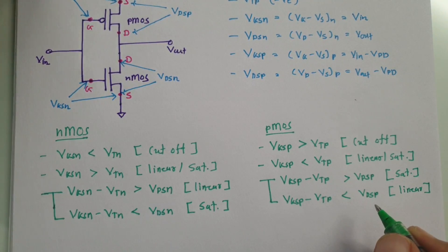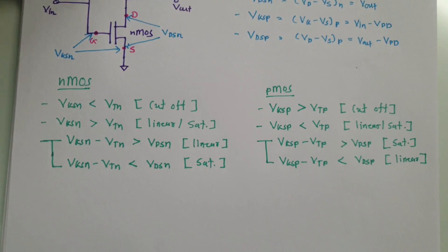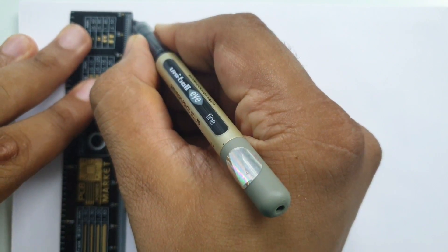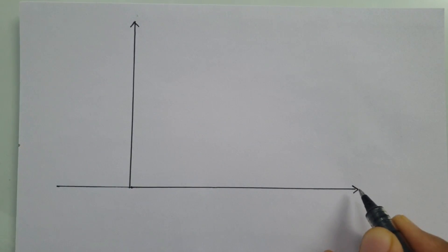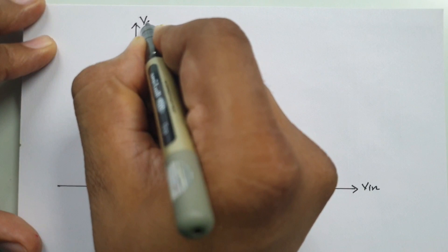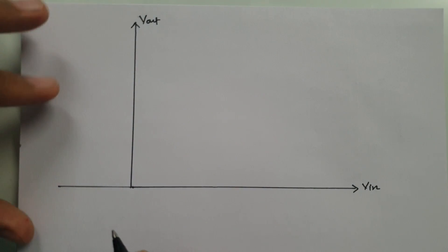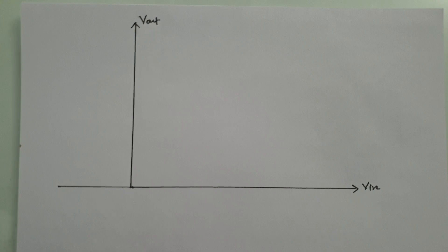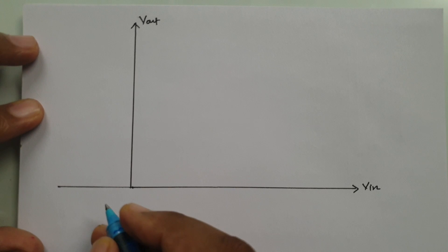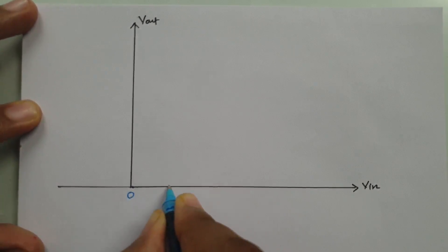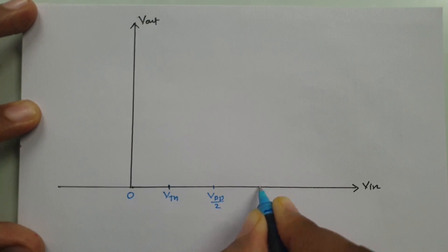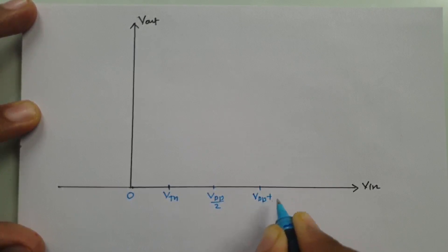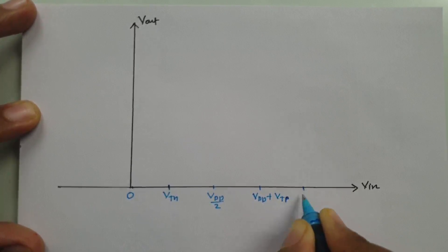Now let us understand how the voltage transfer characteristic is plotted — it is the characteristic of output voltage with respect to input voltage. On the x-axis we have input voltage and on the y-axis we have output voltage. Some important voltages on the x-axis: starting from 0, then VTN, then VDD/2, then VDD plus VTP, and then VDD. On the y-axis we have VDD at the top and VDD/2 in the center.